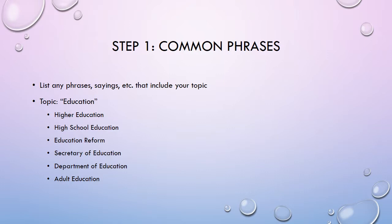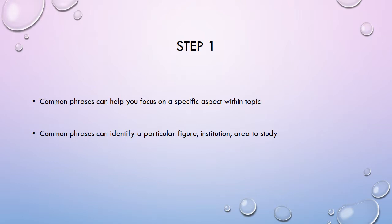For education, we can start thinking what phrases have the word education in them: higher education, high school education, education reform, secretary of education, department of education, pre-K education, K through 12 education, adult education. These are all phrases that have the word education in them. We're getting more specific — some specific areas that we can start looking at and focusing our attention on. Come up with as many phrases as you can that have that word — the word that's the name of your topic, your general subject — in it. This helps you start focusing on specific aspects and can also help you identify particular figures, institutions, and areas to study.